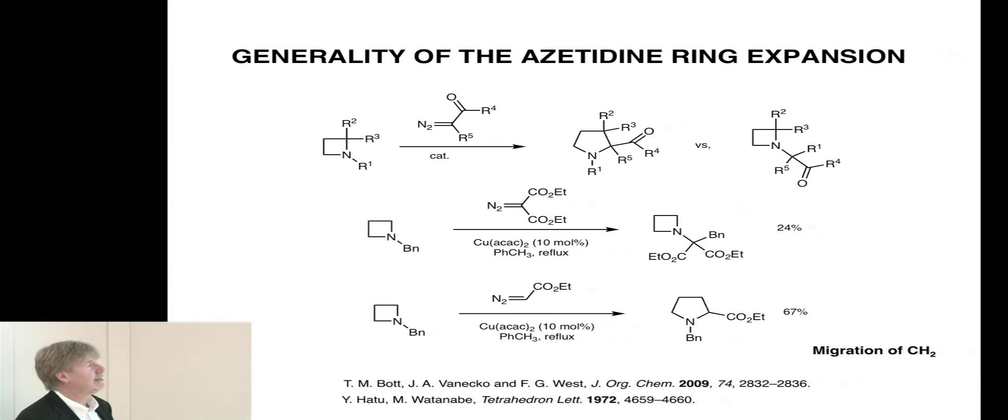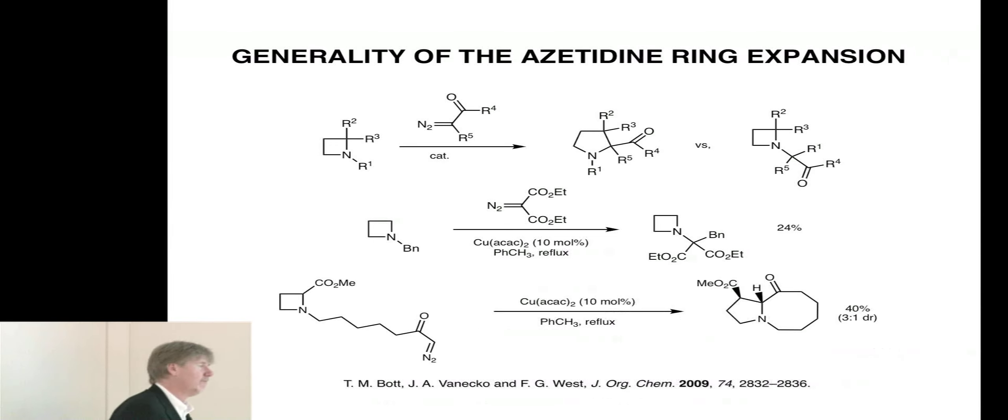One case where we did see no ring expansion, only benzyl migration, was the same azetidine, but now a more stabilized diazo compound. That gives a more stabilized, longer-lived ammonium ylid. In that case, it seems that it's more sensitive to the inherent stability of the migrating group. We get only benzyl migration, though in quite poor yield.